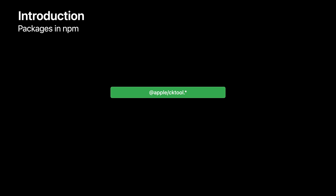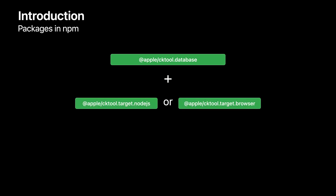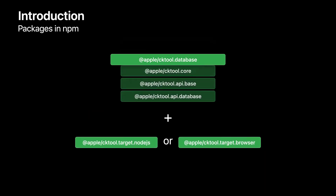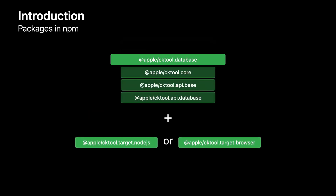The following packages are part of the cktool.js distribution. Note that these packages are within the @Apple scope and follow the convention of using cktool at the start of the name. The main package that you'll use is cktool.database. To enable communication with iCloud, you'll also need to use one other package for your target platform: cktool.target.nodejs for Node.js, or cktool.target.browser for web browsers. cktool.database automatically pulls in three more packages: cktool.core, cktool.api.base, and cktool.api.database.